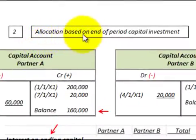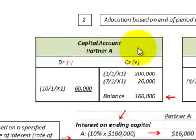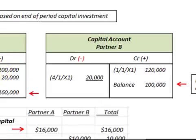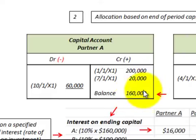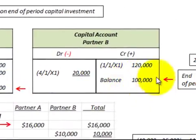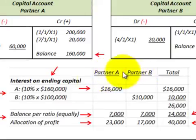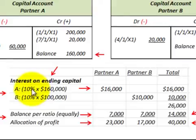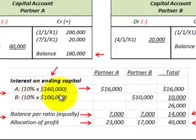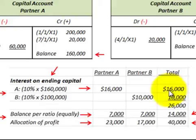Now let's look at profit allocation based on the end-of-period capital investment. Using the same example, but now looking at ending balances: partner A had an ending balance of $160,000 and partner B had an ending balance of $100,000. At 10% interest, partner A gets $16,000 and partner B gets $10,000, for a total allocation of $26,000 for the year.